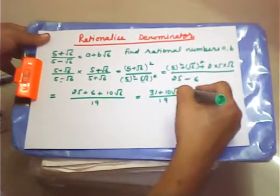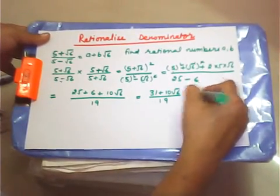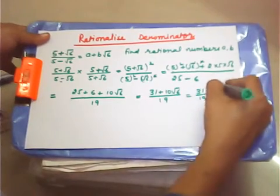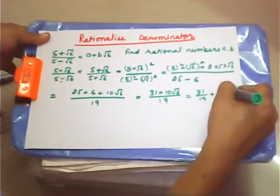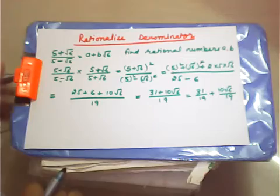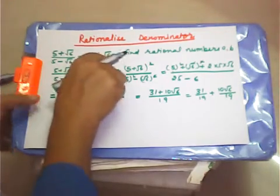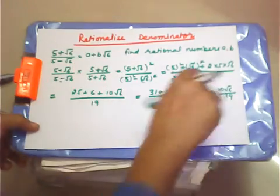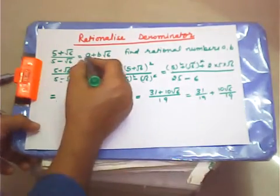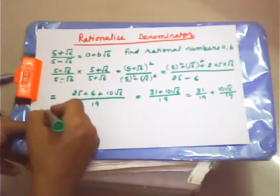We can write this as 31 over 19 plus 10 root 6 over 19. Now we have to find A and B, so we equate this to A plus B root 6.